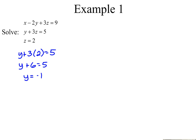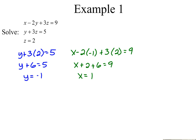Now that we know y and z, we can plug into the top equation and find x. x minus two times y, which we now know is negative one, plus three times z, which we knew at the beginning was two. Solving that equation for x, we subtract the 8 over and get x to be 1. So our solution is the ordered triple (1, -1, 2).